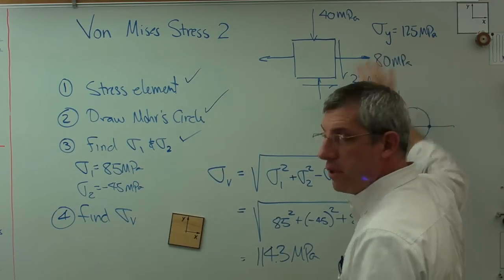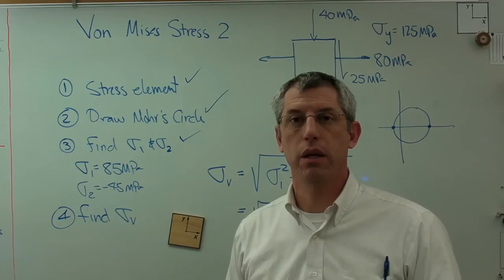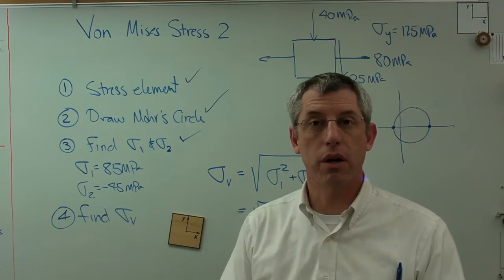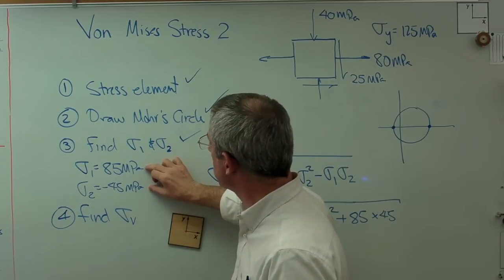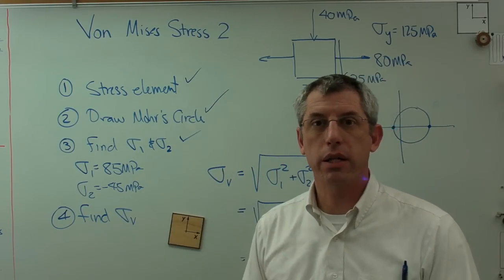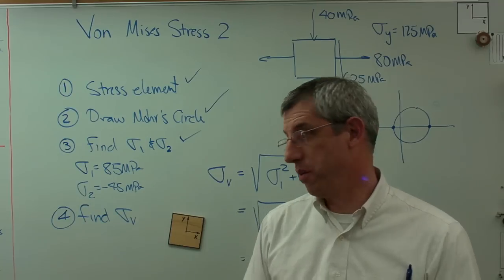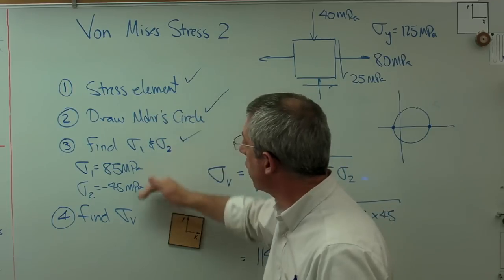This tells me I'm much closer to yield than that criteria would have told me. So, von Mises stress is a more sophisticated way of predicting yield stress, or predicting ductile failure. It takes into account mechanisms that just looking at simple principal stresses doesn't take into account. Now, the mathematics of it is a little complicated, and I can't tell you about it in, what, nine and a half minutes here, okay?